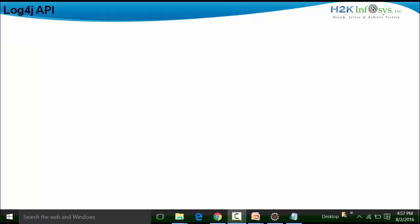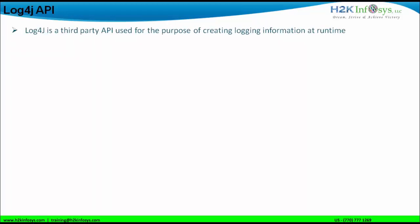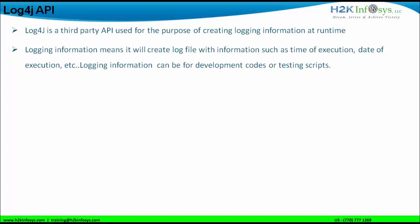Let us look at the theoretical part of the Log4j API first. Log4j is a third-party API which can be integrated with Java language and the Eclipse IDE for the purpose of logging information at runtime. That means when we run the class file, the logging information is created. Logging information means it creates log files with details such as the time of execution and the date of execution. Logging information can be for development code or for testing scripts.